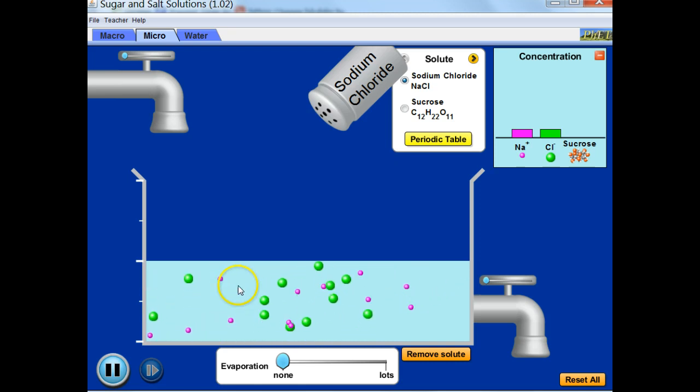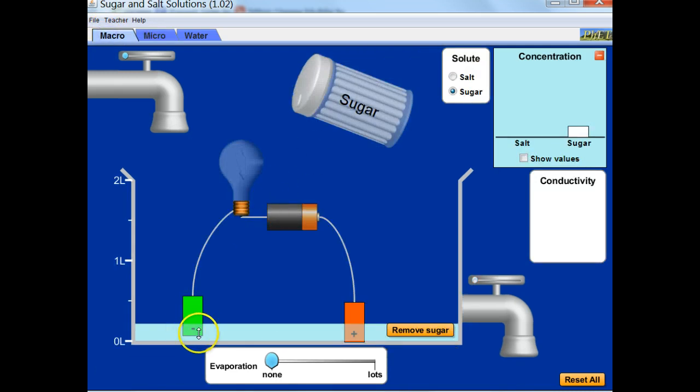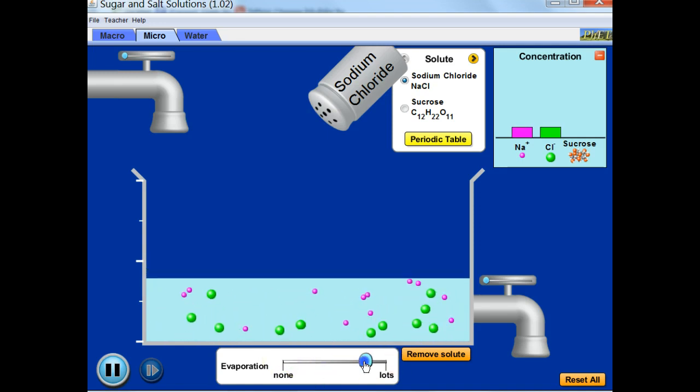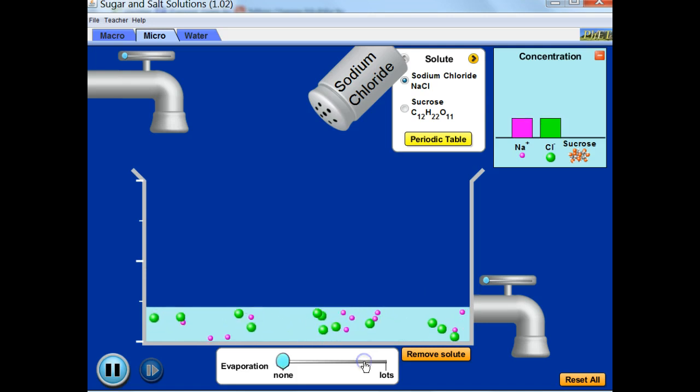These negative ions are going to move that energy from one place to the other and complete the circuit. Because these free moving charges are floating around in that water, it enables the light to turn on. If you increase that concentration, the higher concentration is going to make the light brighter.